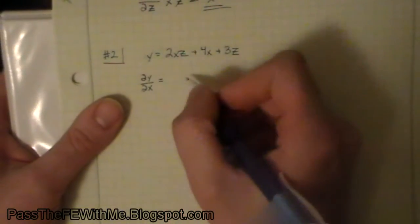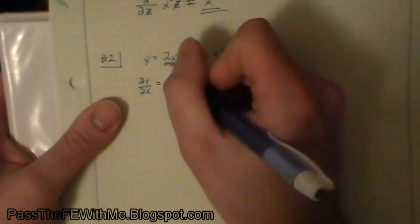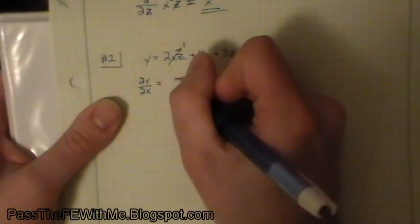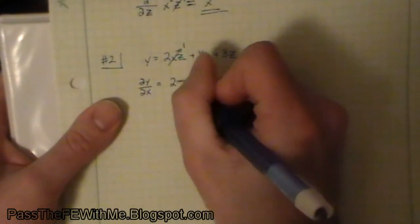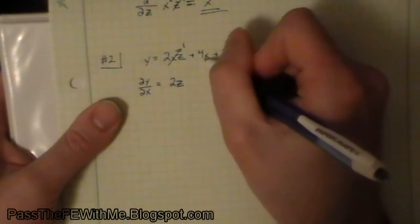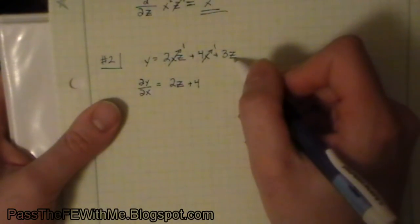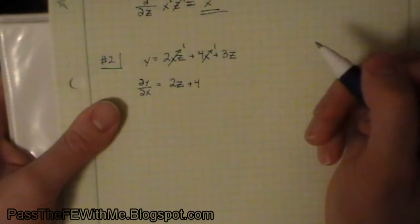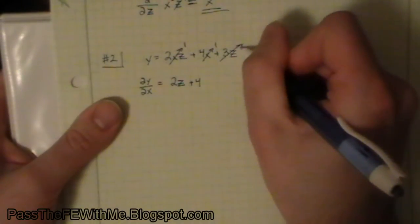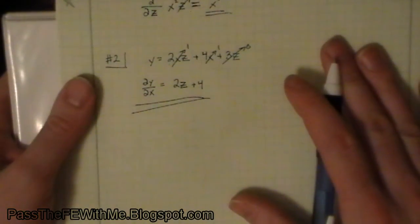Taking the partial derivative of 2xz, the x will go to 1 leaving us with 2z. We're going to take the derivative of 4x with respect to x, so this x just goes to 1 giving us 4. Remember we're treating our z just as though it's a constant, and there's no x in here, so the partial derivative with respect to x of 3z just goes to 0. And that is our answer.